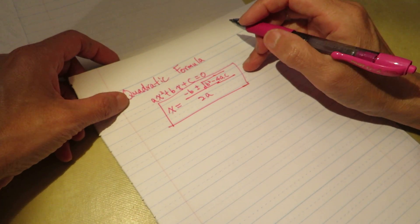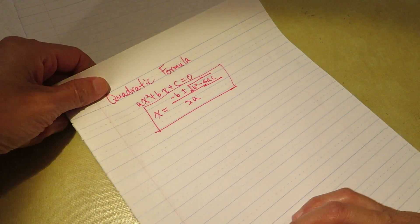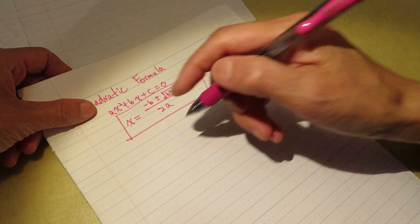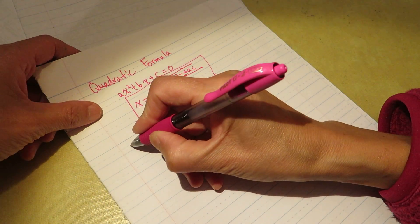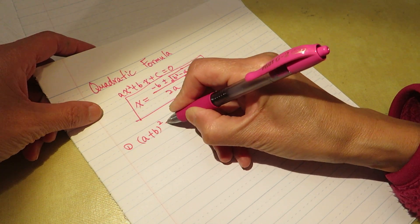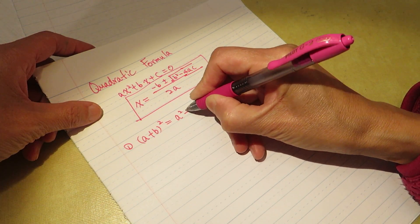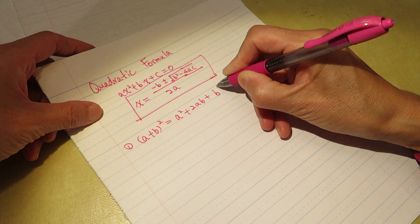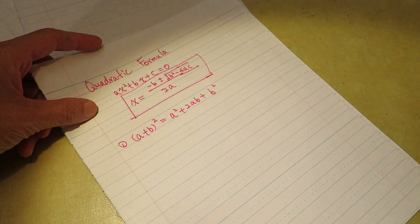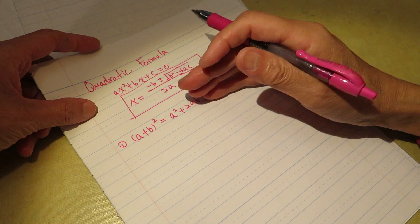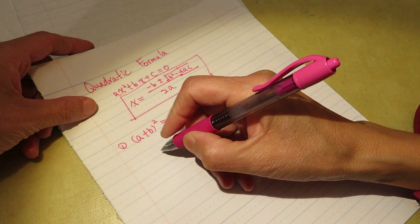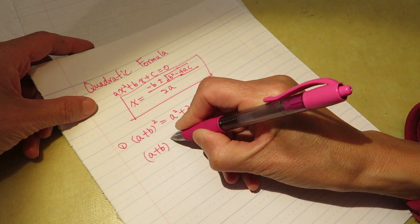But before we figure out this, we go a few steps to bridge us, to bring us to such a solution. First, we need to know (a plus b)² equals a² plus 2ab plus b². If you do not instantly remember this, which you should by any means, you can do it step by step.